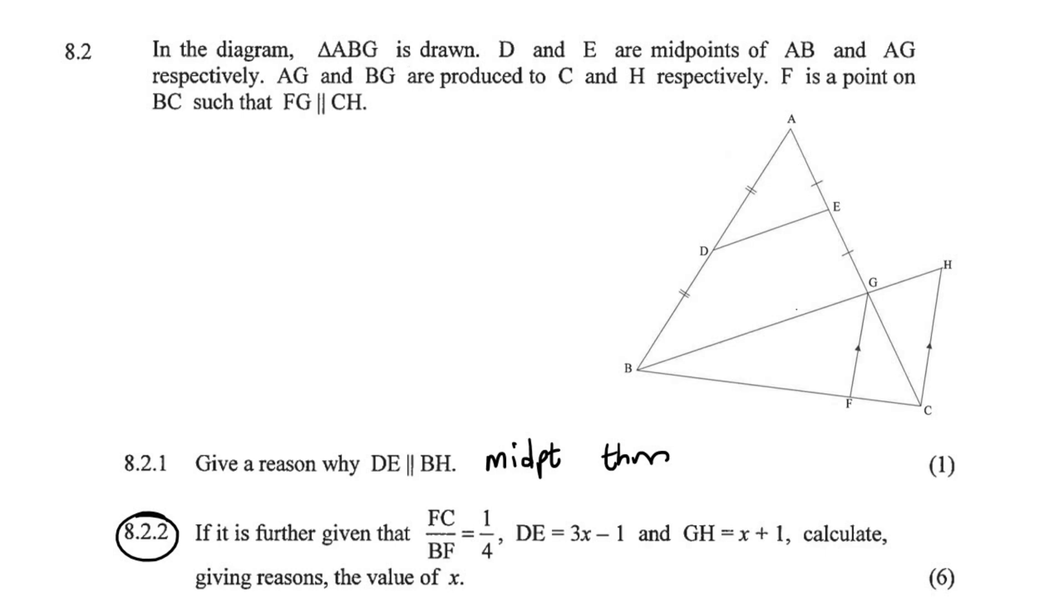If it is further given that FC over BF, so FC over BF is 1 over 4, so what we'll do is I'm going to use 4Y and 1Y. I'm not going to use X because they've already got X over here.